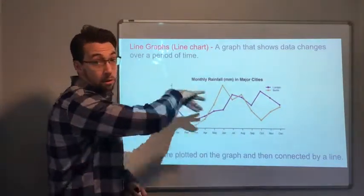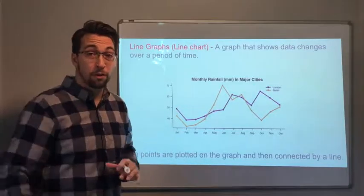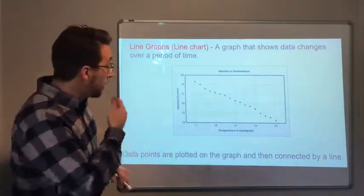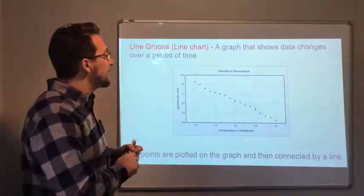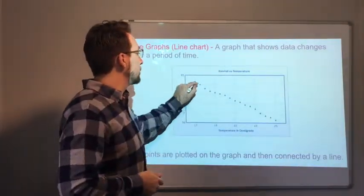So here you have a double line graph, and you're comparing two different groups, two different variables. So data points are plotted, and then you can connect the line from point to point to point.